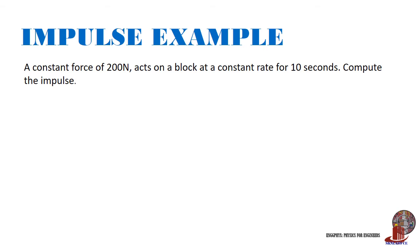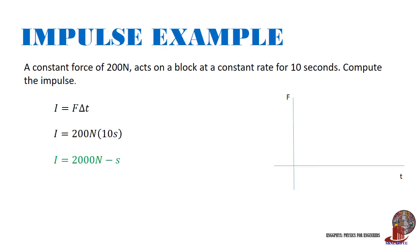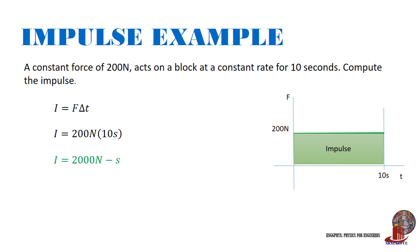Here are some examples for impulse. A constant force of 200 Newtons acts on a block for 10 seconds. Compute the impulse. Knowing that impulse equals force times change in time, we directly solve: 200 Newtons times 10 seconds gives 2000 Newton-seconds. When solving graphically, where time is the x-axis and force is the y-axis, we draw the constant force and the area included is the impulse: base times height, 10 times 200, giving the same answer of 2000 Newton-seconds.